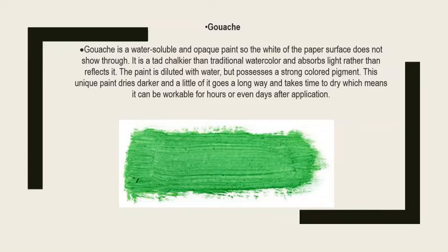Gouache is a paint not very commonly used in schools — it is mostly used professionally. Just like watercolor, it needs a lot of water to be used and it possesses a very chalky look or finish. It is quite thick after applying, and the value of the color gets a point darker when it dries up. It takes a lot of time to dry and at times can take more than a day after application. This is mostly used by artists whose genre is purely painting and who work on a very specific art piece for days.